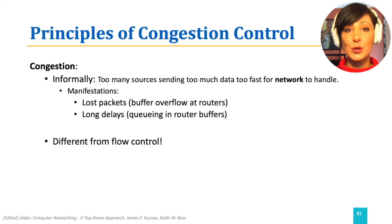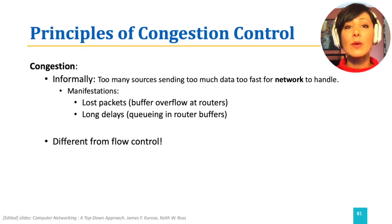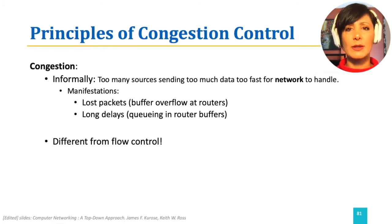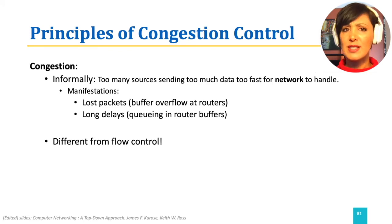We learned what to do to manage the reliability of transmission when loss and delays happen, with mechanisms to retransmit lost packets and ways to solve out-of-order reception due to delays, and delivering data in order to the application layer. But we haven't learned how to alleviate the congestion problem for the network. We need to take a closer look at congestion itself to better understand the solutions for it.